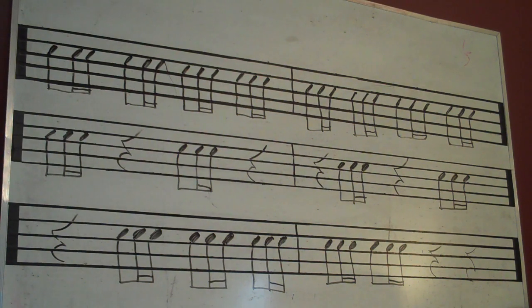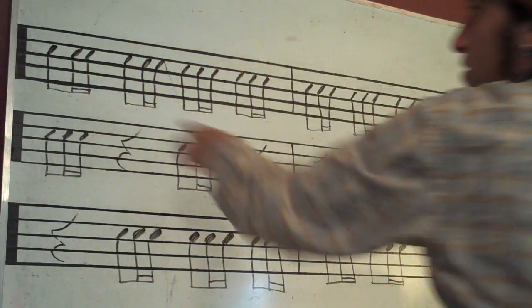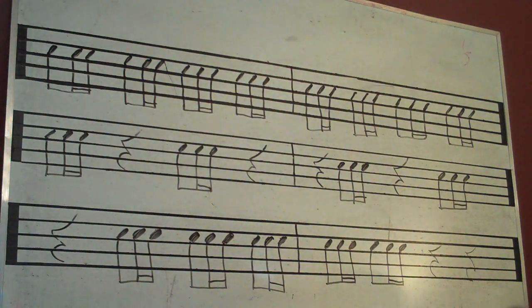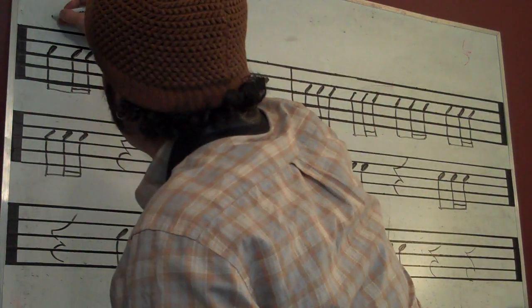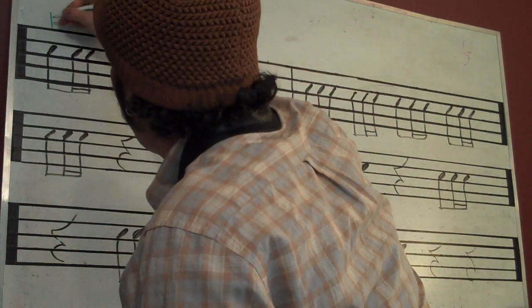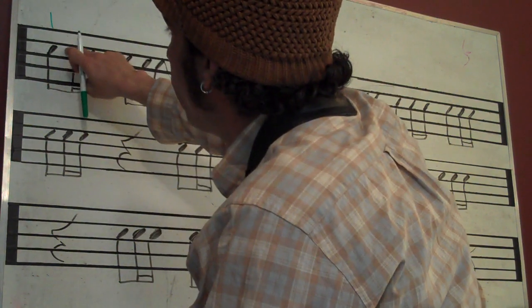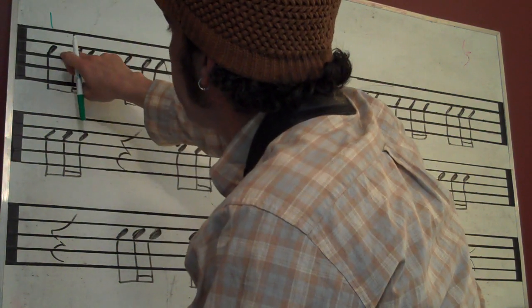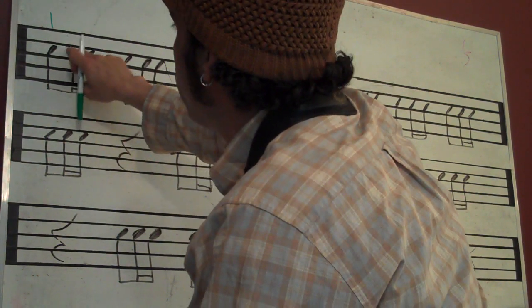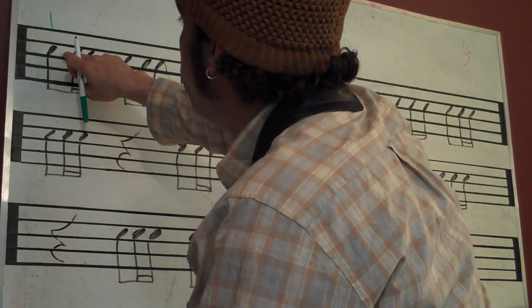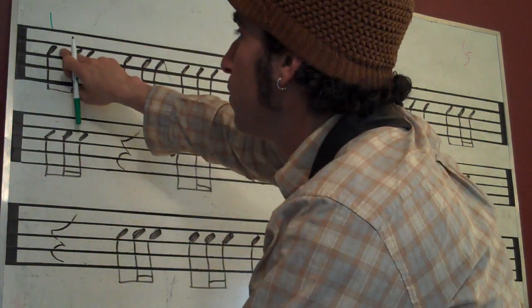Today we're talking about the rhythm of eighth note and two sixteenths. Let's write out how that would look and how it would sound. So one — there's no sixteenth note in there to complete the four sixteenth notes, which would be equal to a quarter note.